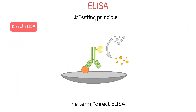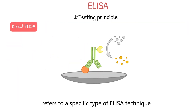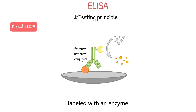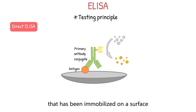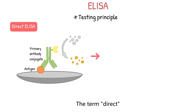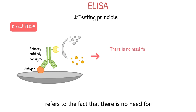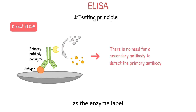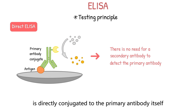Direct ELISA refers to a specific type of ELISA technique in which a primary antibody labeled with an enzyme directly bonds to the target antigen that has been immobilized on a surface such as the microplate. The term direct refers to the fact that there is no need for a second antibody to detect the primary antibody, as the enzyme label is directly conjugated to the primary antibody itself.